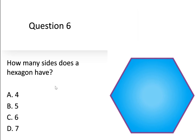Question number 6. How many sides does a hexagon have? Option A, 4. Option B, 5. Option C, six. Option D, seven.